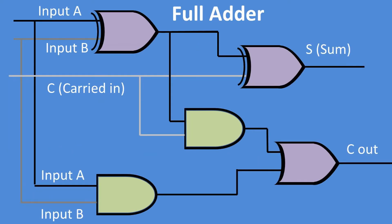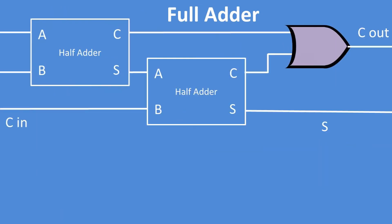The full adder can take a carry bit, and the logic diagram is listed on this slide. This is hard to look at, so let's look at a block diagram instead. Really, this full adder is two half adders combined with an OR gate to make a full adder.